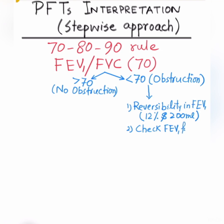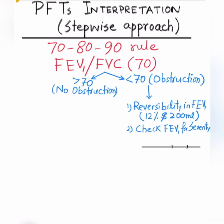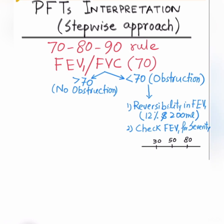We also have to check FEV1 to look for the severity of obstruction. I'm drawing a line with cutoff points: 80, 50, and 30. If baseline FEV1 is more than 80%, it's mild obstruction. Between 50 and 80 is moderate. Between 30 and 49 is severe. And less than 30 is very severe obstruction.